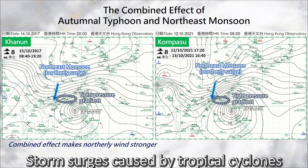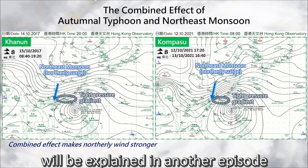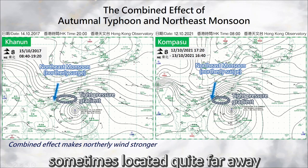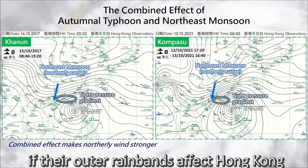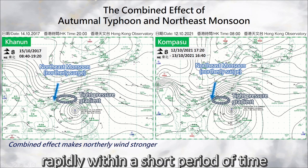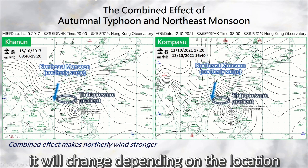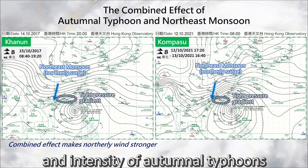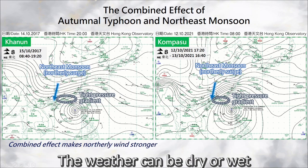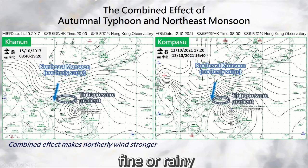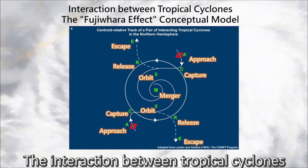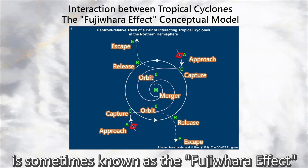Storm surges caused by tropical cyclones will be explained in another episode. Although tropical cyclones are sometimes located quite far away from Hong Kong, if their outer rain bands affect Hong Kong, they'll bring squally showers, causing the wind strength to increase rapidly within a short period of time. Regarding the local weather, it will change depending on the location and intensity of autumnal typhoons as well as the development and intensity of the northeast monsoon — the weather can be dry or wet, fine or rainy. It's also another challenge to forecast correctly. The interaction between tropical cyclones is sometimes known as the Fujiwara effect.